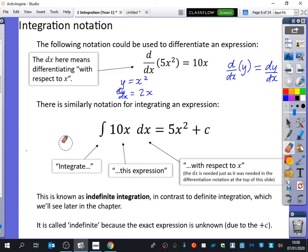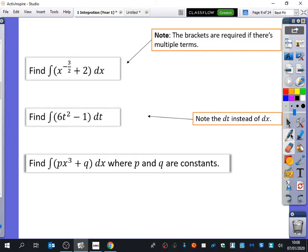So what we've got here, written at the bottom, is that this is known as indefinite integration in contrast to definite integration, which we will see later in this chapter. And it is called indefinite because the exact expression is unknown. So if something is indefinite, it means we're not really sure what it is. That's because of the plus c that we get at the end. We don't really know what it integrates to. So we're not definite about what it integrates to. So we give it a plus c.